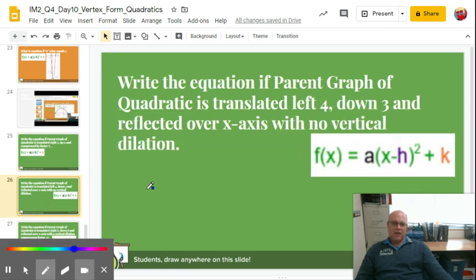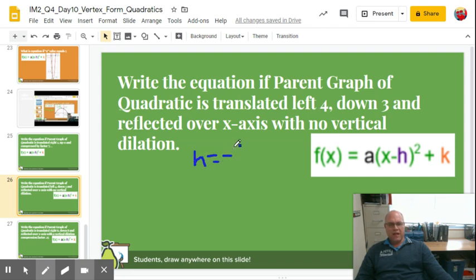Next one, same process. So left 4, this time tells me left 4 means h is negative 4. Down 3 tells me k equals negative 3.